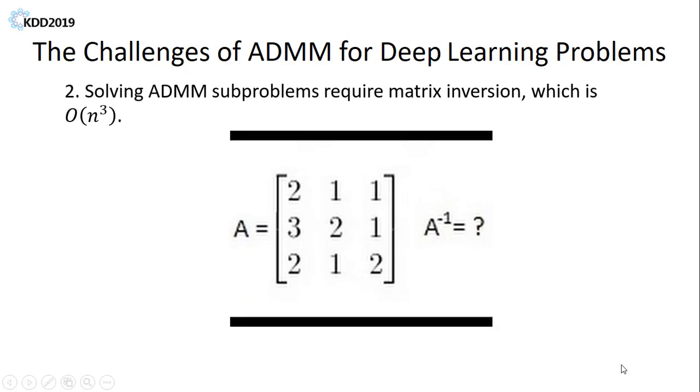Secondly, solving sub-problems of ADMM for deep learning problems requires operation of matrix inversion, which is computationally expensive. Finally, there is still a lack of theoretical proof for the convergent behavior of ADMM for deep learning problems.